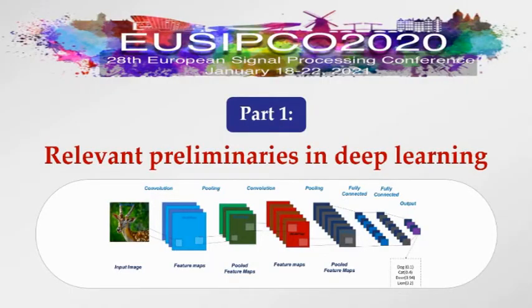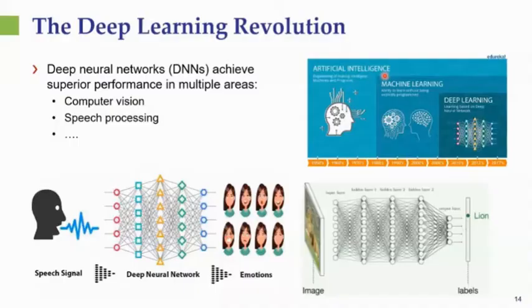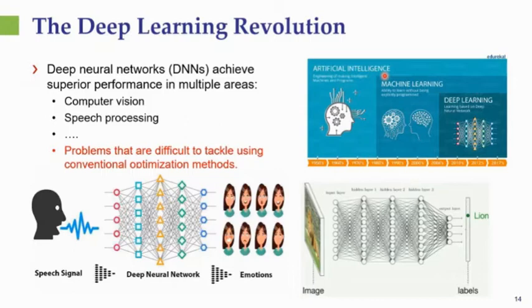Hello, my name is Nir Schlesinger. I am a postdoctoral researcher in Weizmann Institute, where I have the honor of working with Yonina Eldar. In the next part of our tutorial, I will survey some relevant preliminaries in deep learning. As we know, we're nowadays witnessing the deep learning revolution. Deep neural networks allow to achieve superior performance in a multitude of areas, including computer vision, speech processing, and in various problems, which are difficult to tackle using conventional optimization tools.